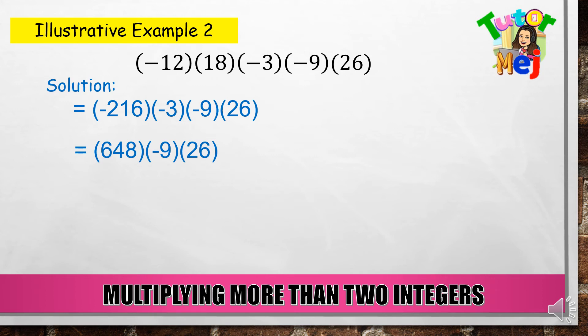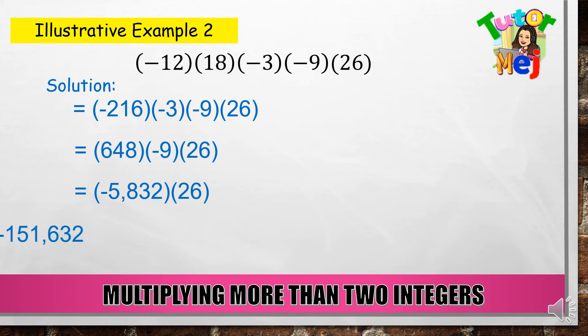Multiply naman ulit natin ang 648 times negative 9, tapos idugtong ulit natin yung 26. Result: negative 5,832 times 26. And finally, multiply na natin ang negative 5,832 times positive 26. Ang result: negative 151,632.